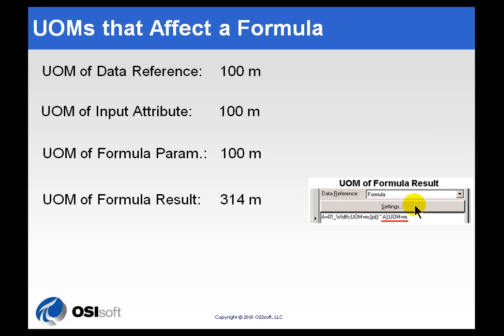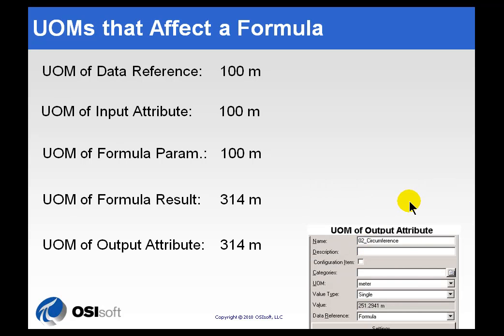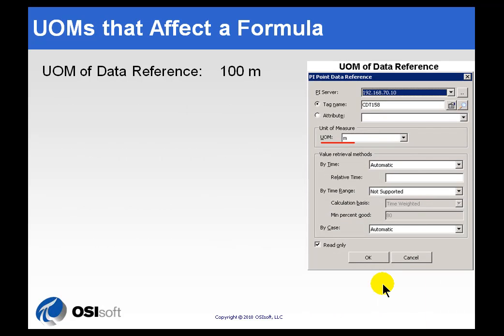Going back to our Shortcut here, we can see in the Definition of that Attribute, we're specifying the Result comes back as meters. And then lastly, the Output Attribute itself has yet another Unit of Measure. So, as you can see, there are a total of five different Unit of Measures involved here.